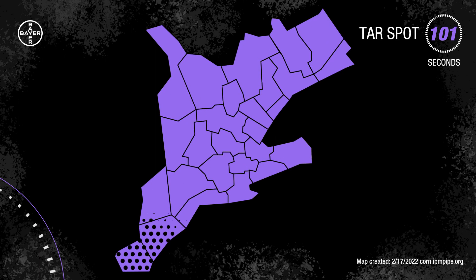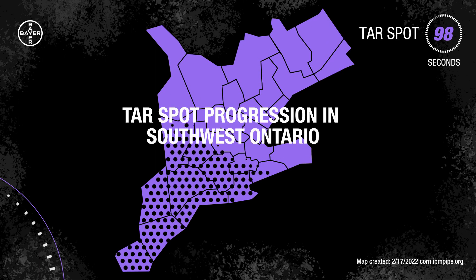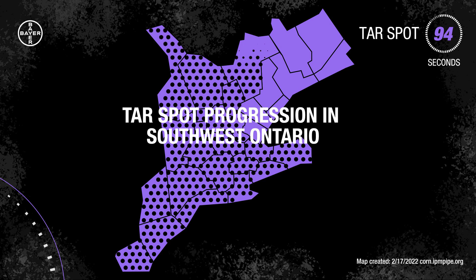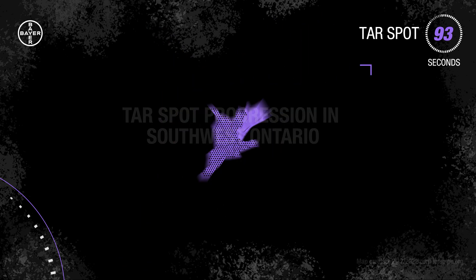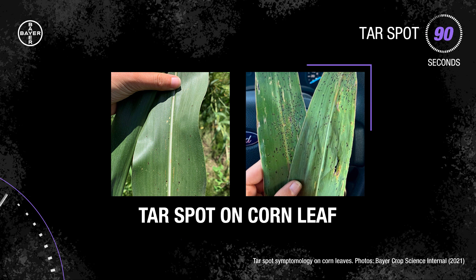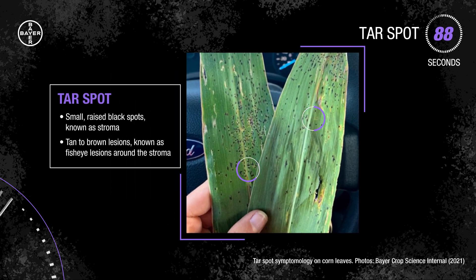If you grow corn in Ontario, you've probably heard of tar spot. It's a disease that was first identified here in September 2020 and has quickly grabbed the attention of corn growers. Tar spot is a fungal disease that is easily recognizable by black, tar-like specks that can appear on both sides of the leaf.